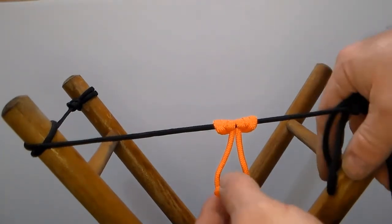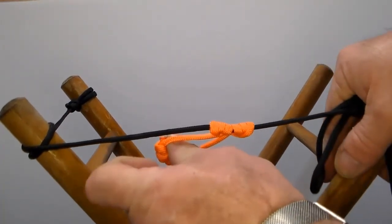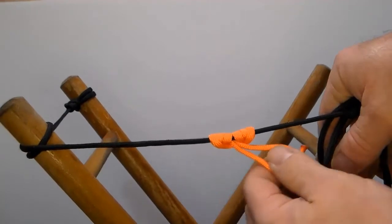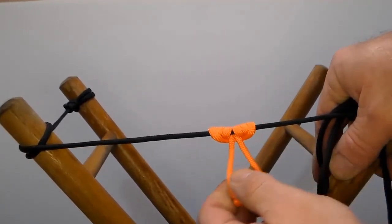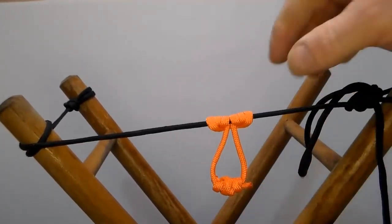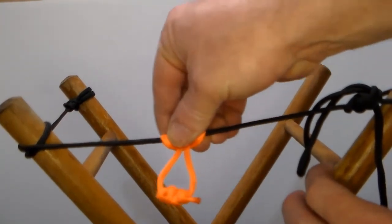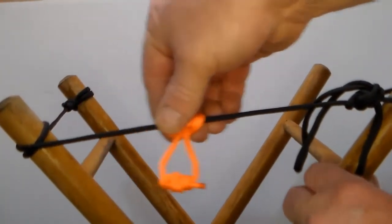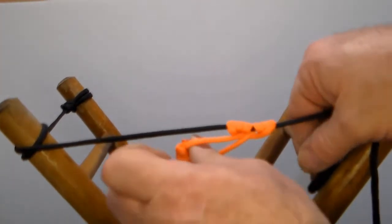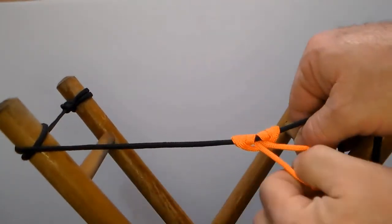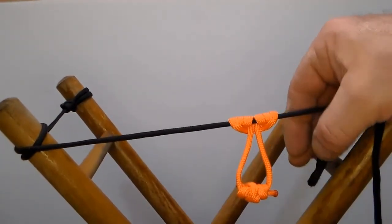Now the cool thing about a prusik loop is I'm pulling this way and I can't move it. I'm pulling this way and I can't move it. It bites down on that cord. But if I grab it here, I can slide it anywhere along there. But as soon as you put this lateral stress on it, it locks up. And that is how you do a prusik loop.